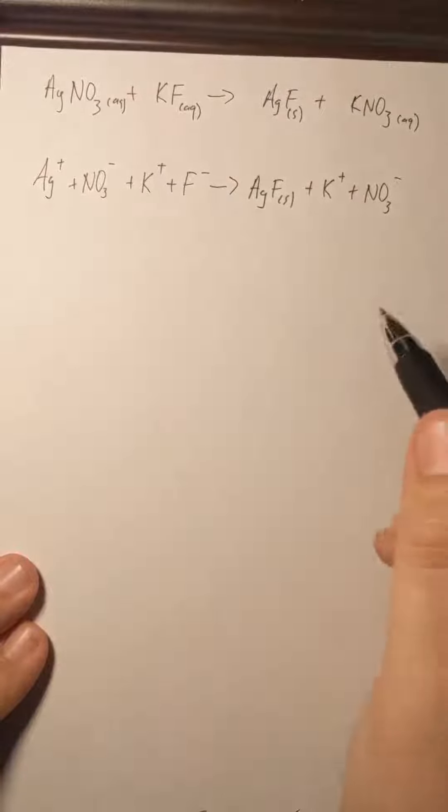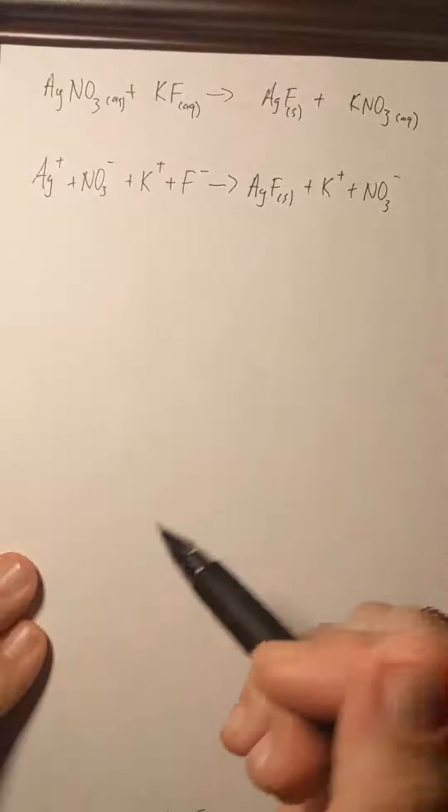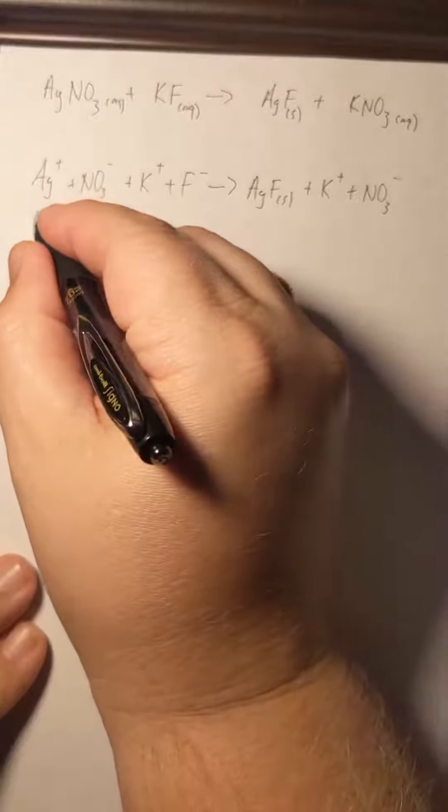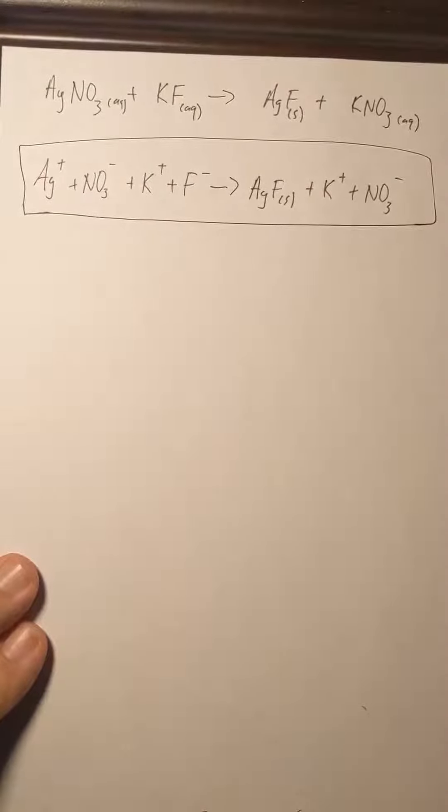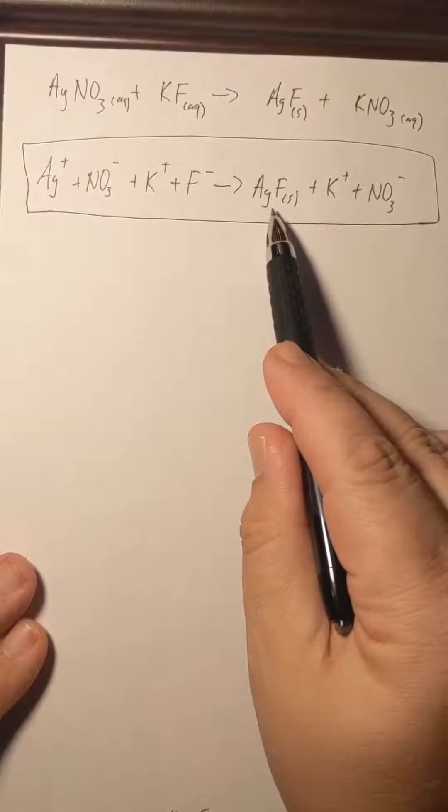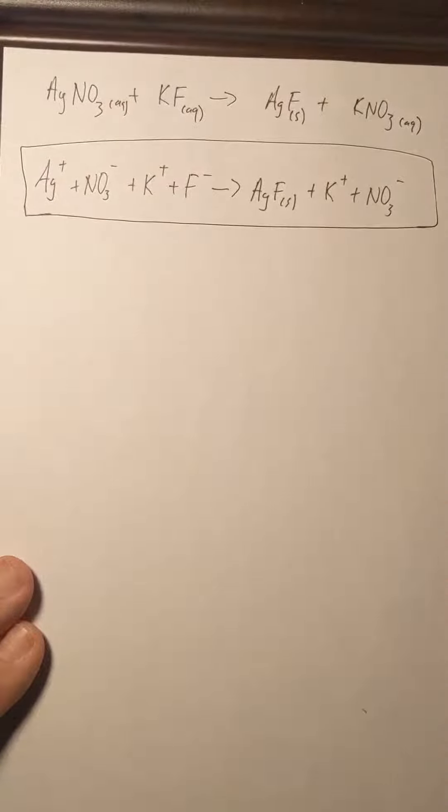Now we've left off the aqueous labels for these ions just to save a little bit of space, but if you write them in it's perfectly fine. So our complete ionic equation is this right here. We've got everything written as an ion except the silver fluoride which is a solid, so we want to show it as if it were a molecular compound.